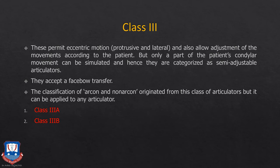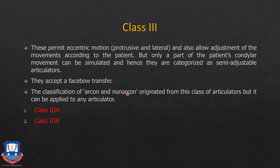Next, class 3 articulators. These are slightly better — they accept eccentric motions, that is protrusive and lateral records, and also allow adjustment of movements according to the patient. However, only part of the patient's condylar movements can be simulated, so they are categorized as semi-adjustable. These articulators accept protrusive records and lateral records; you can adjust the horizontal condylar guidance, lateral condylar guidance, and incisal guidance — but only to a certain extent and not as accurately as in the patient, because these articulators accept static records and not dynamic records. The key difference between class 2 and class 3 is that class 3 accepts the face-bow transfer. These are also the articulators that come under arcon and non-arcon classifications.